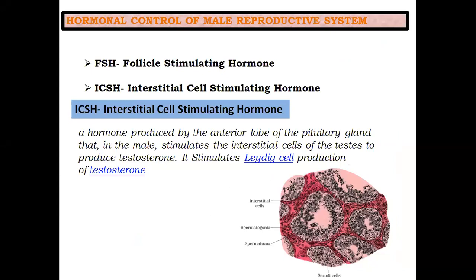Hormonal control of male reproductive system — the male reproductive system is basically controlled by two hormones: FSH and ICSH. FSH stands for Follicle Stimulating Hormone, and ICSH stands for Interstitial Cell Stimulating Hormone.